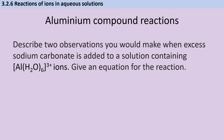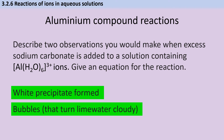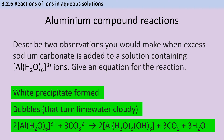Exam question: Describe two observations when excess sodium carbonate is added to a solution of hexa aqua aluminium 3+ ions, and give an equation for the reaction. The two observations are a white precipitate forming and bubbles of gas (CO₂) being produced — theoretically enough to turn lime water cloudy. The equation shows aluminium hexa aqua ions reacting with carbonate ions to produce the solid aluminium hydroxide precipitate, carbon dioxide, and water.